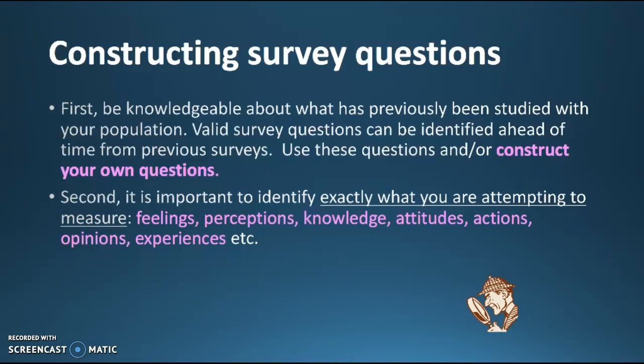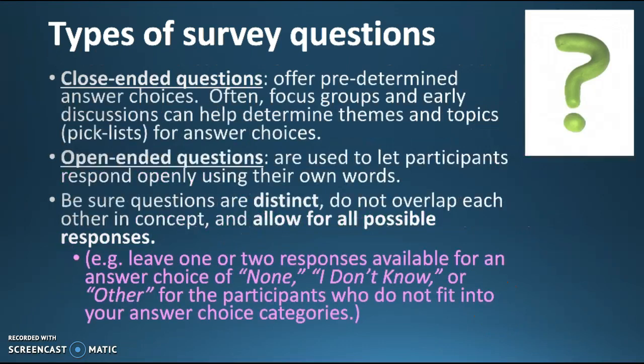The types of survey questions people usually write are either closed-ended or open-ended. Closed-ended questions offer predetermined answer choices. Often a focus group and early discussion can help you get the themes and topics you want to use for those answer choices — I call them pick lists, A, B, C, D. Those are the ones we see the most. They're pretty easy to analyze and develop.